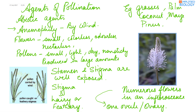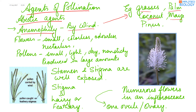Next are agents of pollination. First, the abiotic agents. Anemophily is pollination by wind, seen in grasses, palms, coconut, maize, and Pinus. In these plants, the flowers are very small, colorless, odorless, and nectarless, because they don't require smell or nectar to attract any agent. The pollens produced are very small, light, dry, and non-sticky, and are produced in large amounts, as there is a lot of wastage.